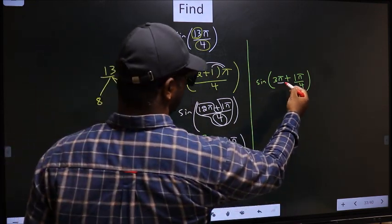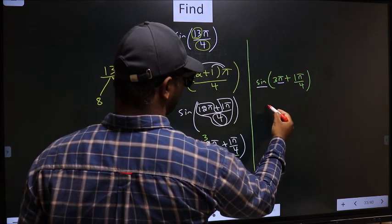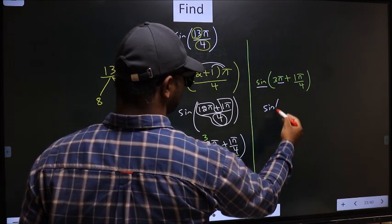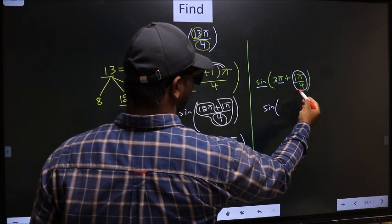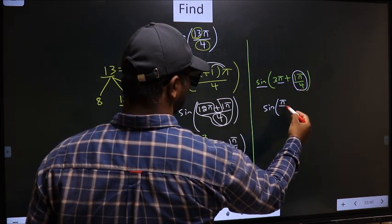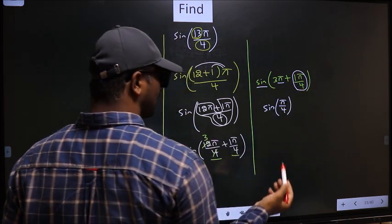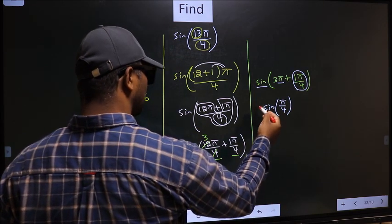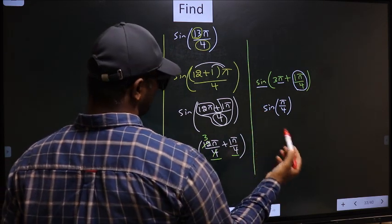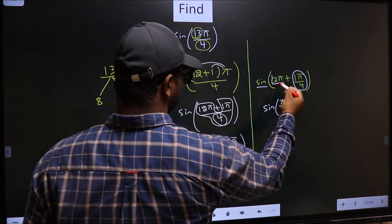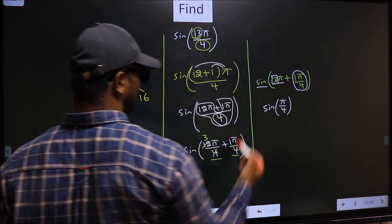Now here we have π. So sin is not going to change. It will remain sin of this angle we get, π/4. Now the question is, will we get here plus or minus? To answer that, you look at this number before π, which is 3.